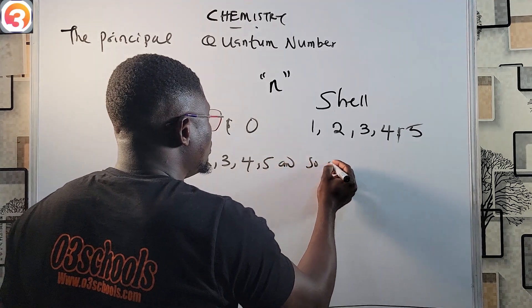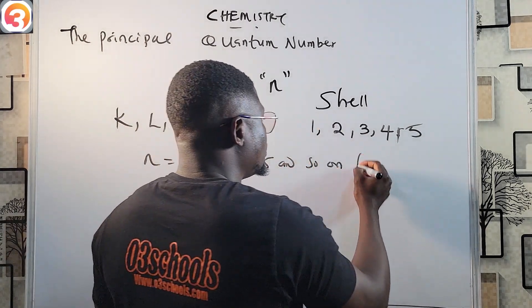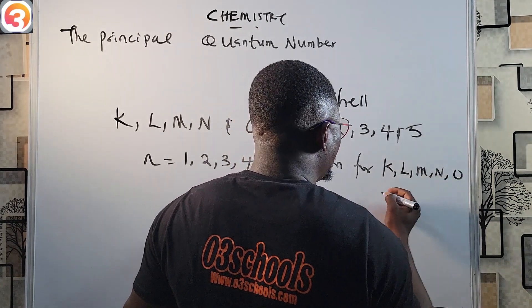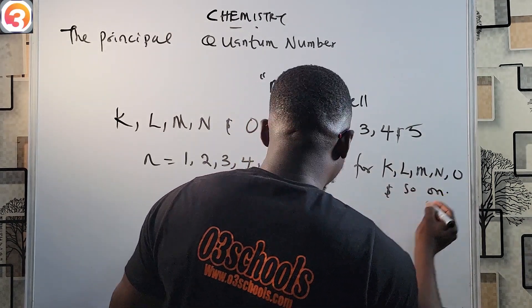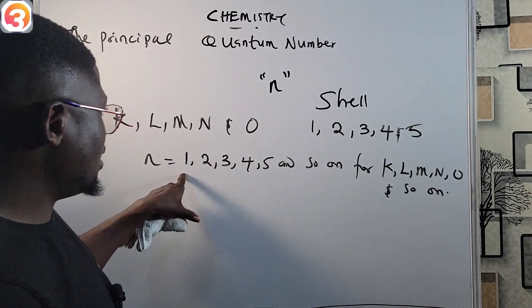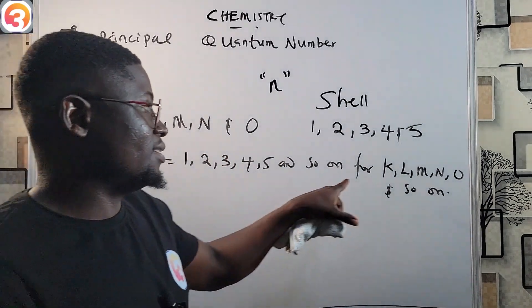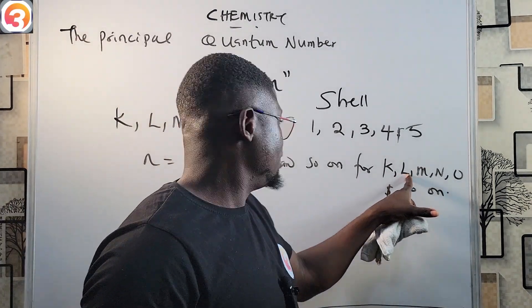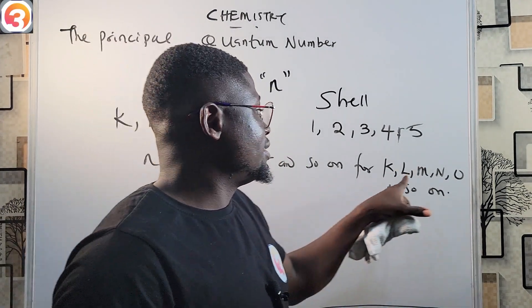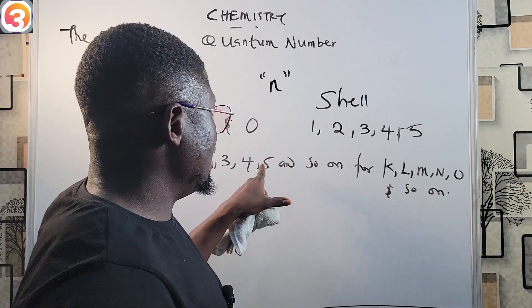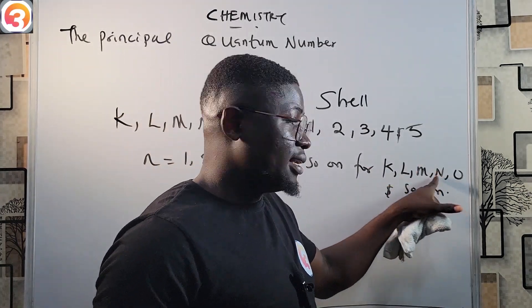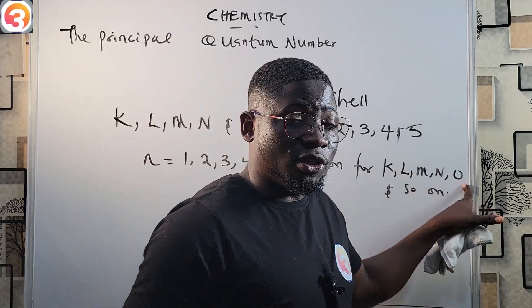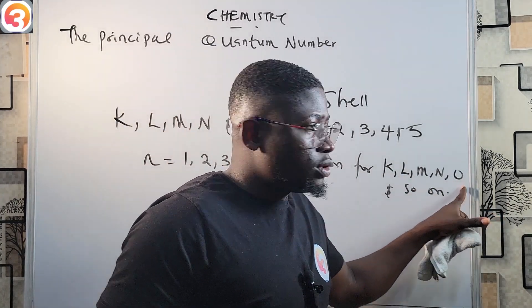That means when n is 1 it resides in the K shell, when n is 2 it resides in the L shell, when n is 3 it resides in the M shell, when n is 4 it resides in the N shell, and when n is 5 it resides in the O shell.